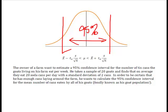So, in order to be certain that he has enough cans lying around his farm, he wants to calculate this 95% confidence interval for the mean number of cans eaten by all of his goats. In other words, the goat population. Well, all he has is a standard deviation for these 20 goats on his farm.